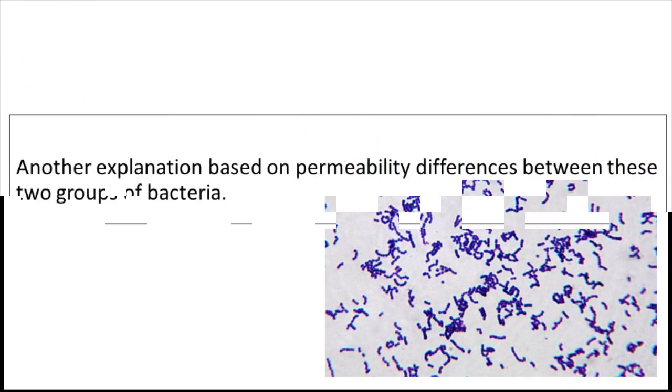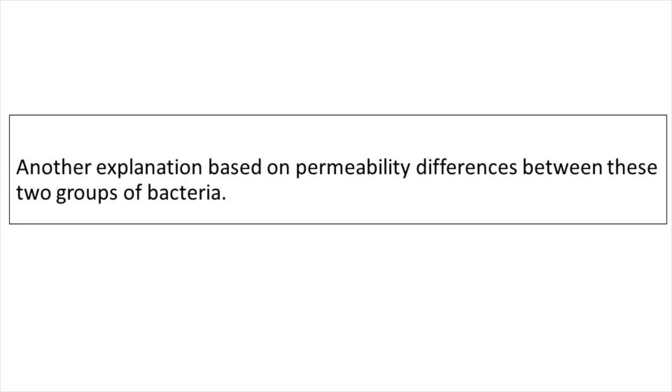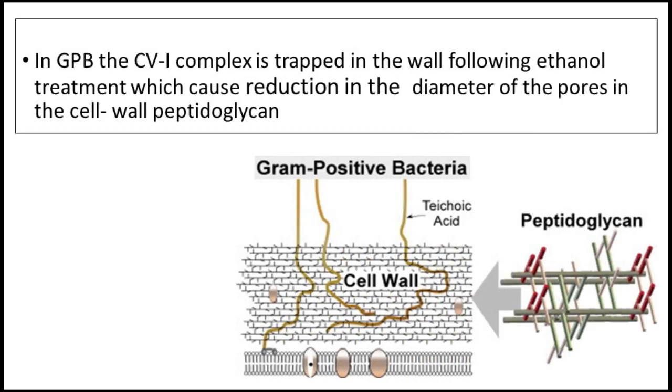There is another explanation, somewhat similar, also based on permeability differences between the two groups of bacteria. In Gram positive bacteria, the crystal violet-iodine complex is trapped in the wall following ethanol treatment.